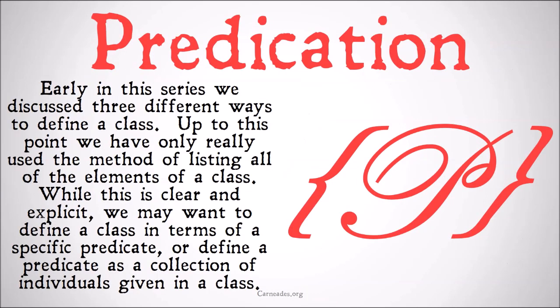Early in this series we discussed three different ways to define a class or a set. Up to this point we've only really used the method of listing all of the elements of a class or a set. While this is clear and explicit, we may want to define a class in terms of a specific predicate, or define a predicate as a collection of individuals given a class. This will help us out when we want to define things like infinite classes or infinite sets.